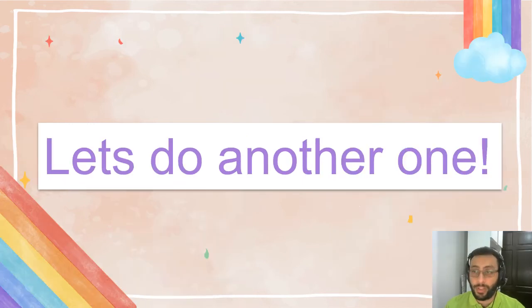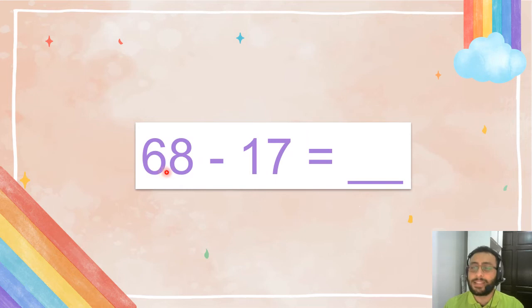Now let's do another one: 68 minus 17. Okay, so you see this one, you can do it in your head. But if you can't, it's okay. We can always use the column form, but let's try to do it in our head, okay? So 8 minus 7—look, we don't have to borrow, so it's easy. 8 minus 7 is 1, and 6 minus 1 is 5.